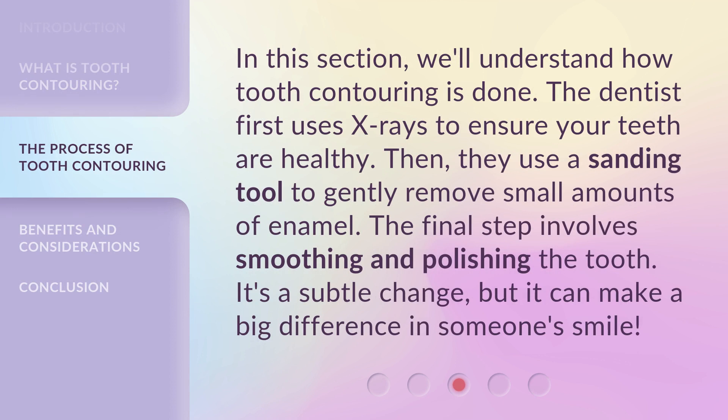In this section, we'll understand how tooth contouring is done. The dentist first uses x-rays to ensure your teeth are healthy. Then, they use a sanding tool to gently remove small amounts of enamel. The final step involves smoothing and polishing the tooth. It's a subtle change, but it can make a big difference in someone's smile.